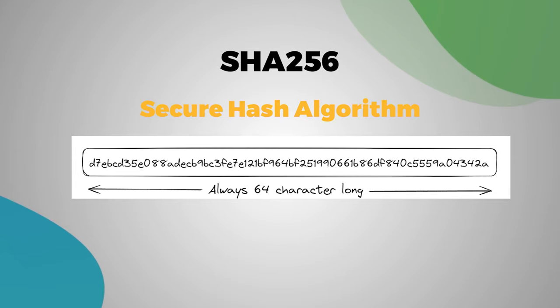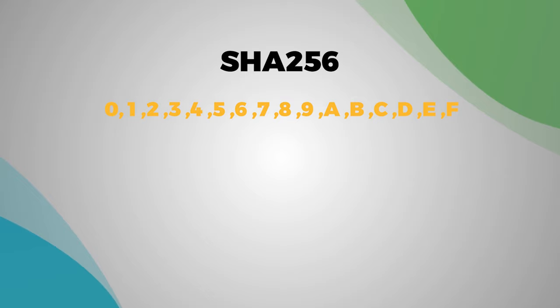The hash is always 64 characters long and it consists of digits as well as letters. That's because it's a hexadecimal hash—it has numbers from 0 to 9 and the letters A, B, C, D, E, F.